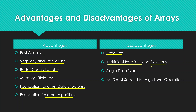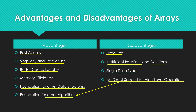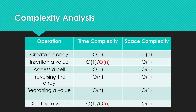When you need memory efficiency, an array is the data structure to go for. Arrays are also used to implement other data structures and algorithms. However, if you need to expand your memory size during runtime, don't use an array. Arrays are not efficient for inserting or deleting values within the array — these are O(N) operations. If you want a data structure that stores data of different types, don't use an array. Arrays also do not have direct support for high-level operations like sorting — you'll need to implement an algorithm for that.